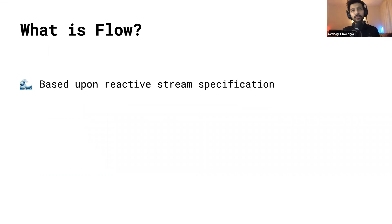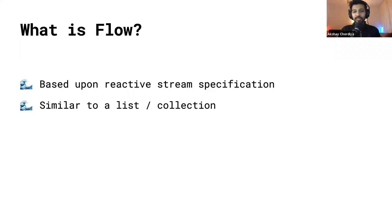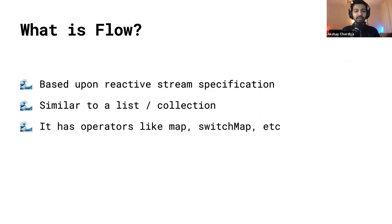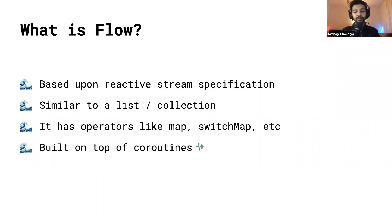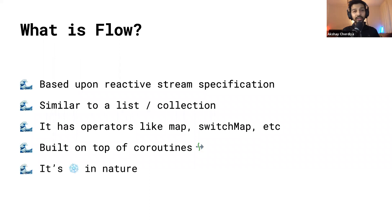Kotlin Flow is based upon the reactive stream specification, similar to RxJava. When you look at a flow as a newcomer, you can think of it as very similar to a list or a collection, except it's cold. Similar to a list, it has operators like map, flatMap, filter, etc. It's built on top of coroutines, which gives the magic of structured concurrency. The key difference from a list is that it's cold in nature.